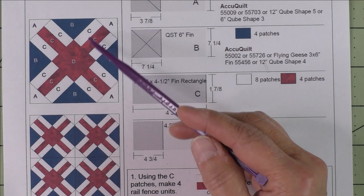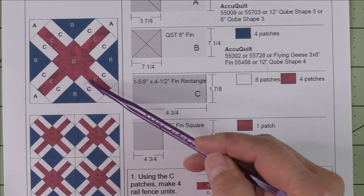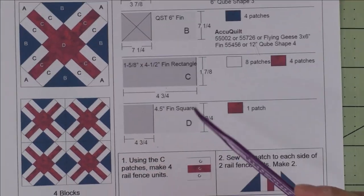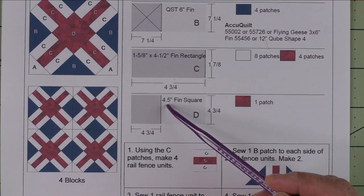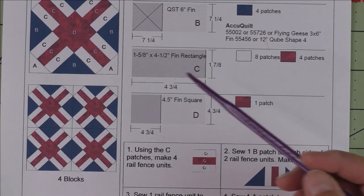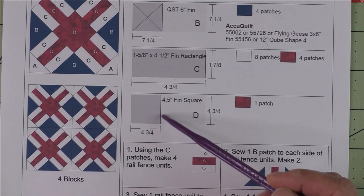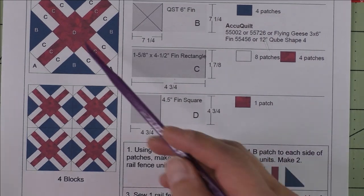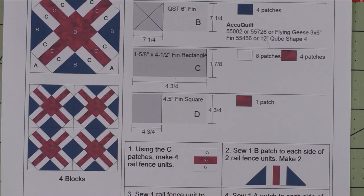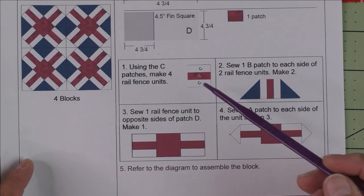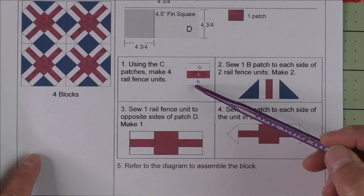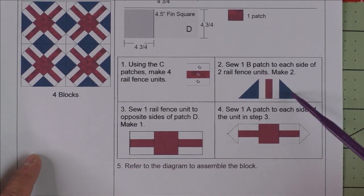And finally, Patch D is a four and a half inch finished square. We'll cut four and three-quarter inch square and we need one patch for the center. To put it together, we're just going to make the little rail fence units, then we're going to sew the sides, and then finish the rest of the block.